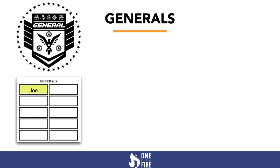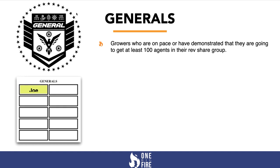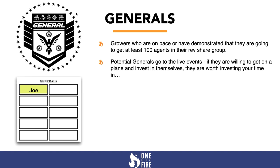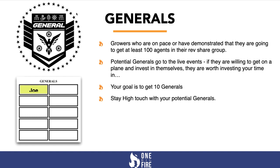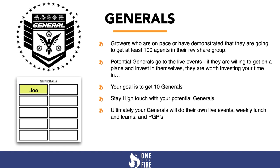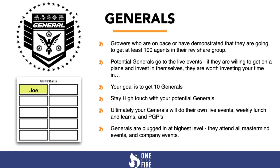In this area, we're going to track your generals. Generals are growers who are on pace or have demonstrated they're going to get to at least 100 agents in their rev share group. You'll recognize potential generals because they go to live events — if they're willing to get on a plane and invest in themselves, they're worth investing your time in. Your goal is to get to 10 generals. Stay high touch with them. Ultimately, your generals will do their own live events, weekly lunch and learns, and PGPs. Generals are plugged in at the highest level and attend all mastermind and company events.